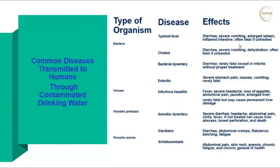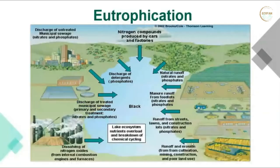Bacterial dysentery is also very common as it affects the gastrointestinal system. Viruses cause diseases like infectious hepatitis (hepatitis B) and joint problems. Parasitic organisms cause amoebic dysentery. These effects are more or less similar but caused by different types of organisms. Different organisms enter water bodies from human sources, animal sources, industrial wastewater, or sewage wastewater.